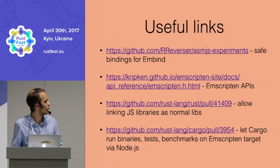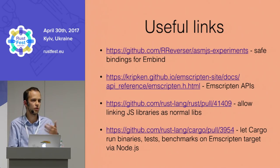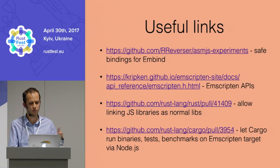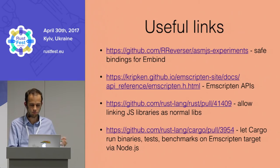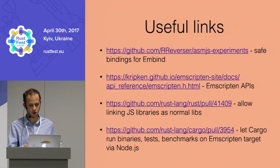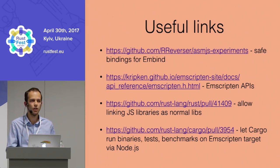This code, which provides safe bindings for all the hacks I showed, is available on GitHub. You can read about Emscripten APIs that are already available, like for networking and everything. The other two are pull requests that should improve how you use Rust with JavaScript. Feel free to help, join in, and contribute.